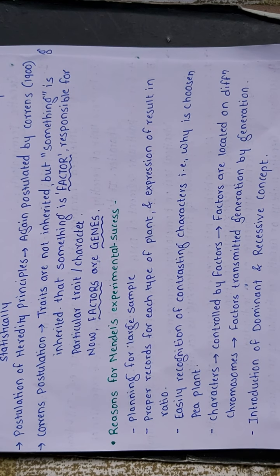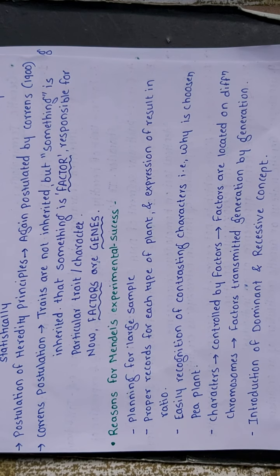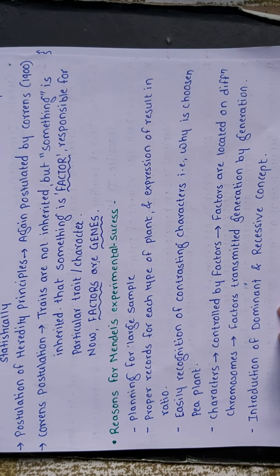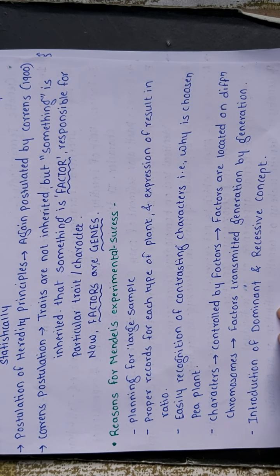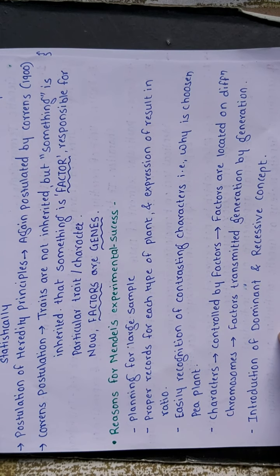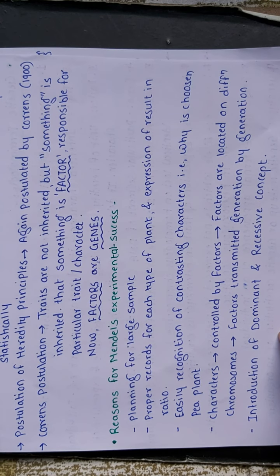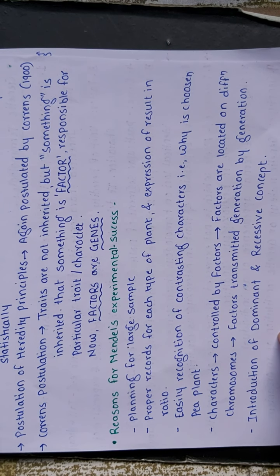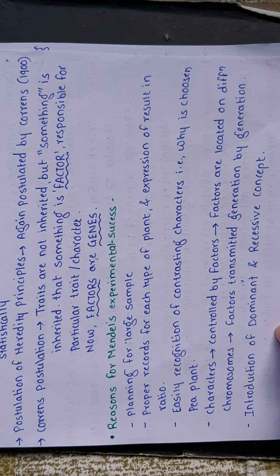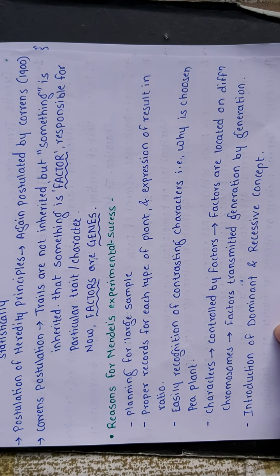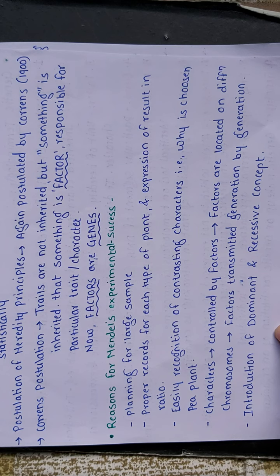The reasons are: first, he planned a large sample. Second, he kept proper records of each type of plant and expressed results as ratios. Third, easily recognizable contrasting characters are present in the pea plant. Fourth, characters are controlled by factors located on different chromosomes — only factors are transmitted generation by generation. Lastly, he introduced the concepts of dominant and recessive traits.